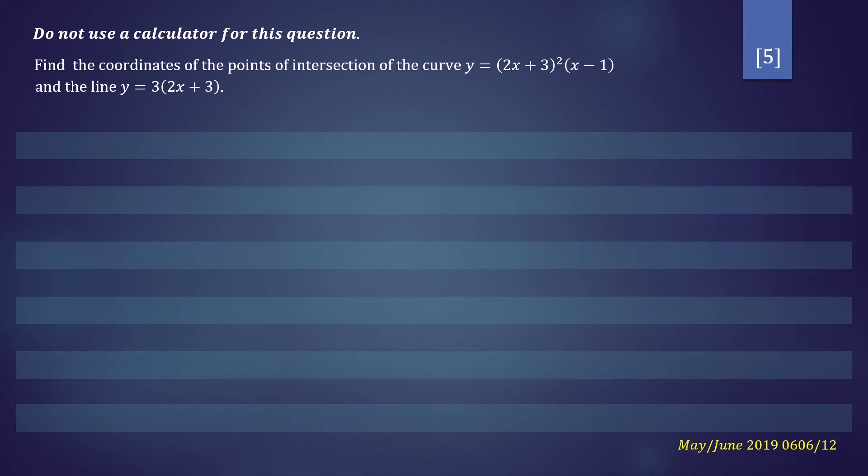Hi everyone, in this question we want to find the coordinates of the points of intersection of the curve y equals 2x plus 3 all squared times x minus 1 and the line y equals 3 times 2x plus 3.